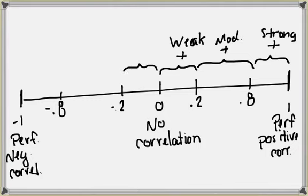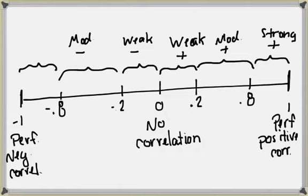This is just mirrored on the other side. From 0 to negative 0.2, we have a weak negative. From negative 0.2 to negative 0.8, we have a moderate negative. And from negative 0.8 to negative 1, we have a strong negative relationship. This is just our general guideline when using r to determine if we actually have some sort of linear relationship.